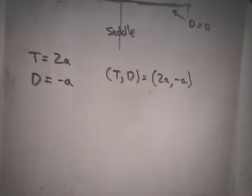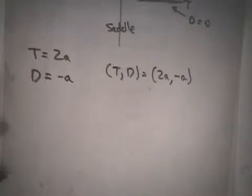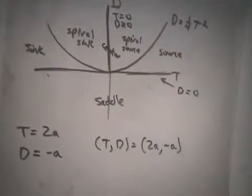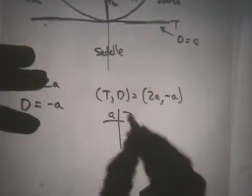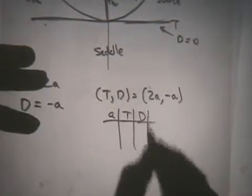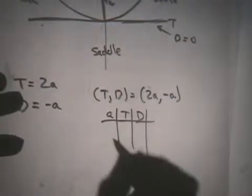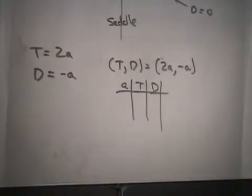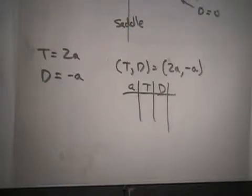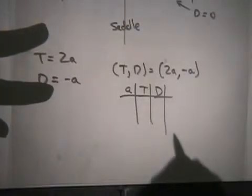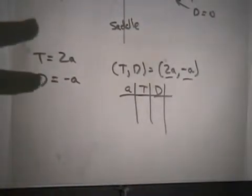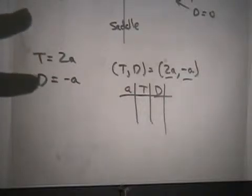If I think of that as describing a parametric curve described by this parametric equation, as a the parameter varies, it's going to describe a certain curve in this trace determinant plane. What curve will it describe? You could just plot some points. You could make a chart and keep track of how T and D vary. You could use your calculator in parametric mode, or you could use Mathematica to make a parametric curve.